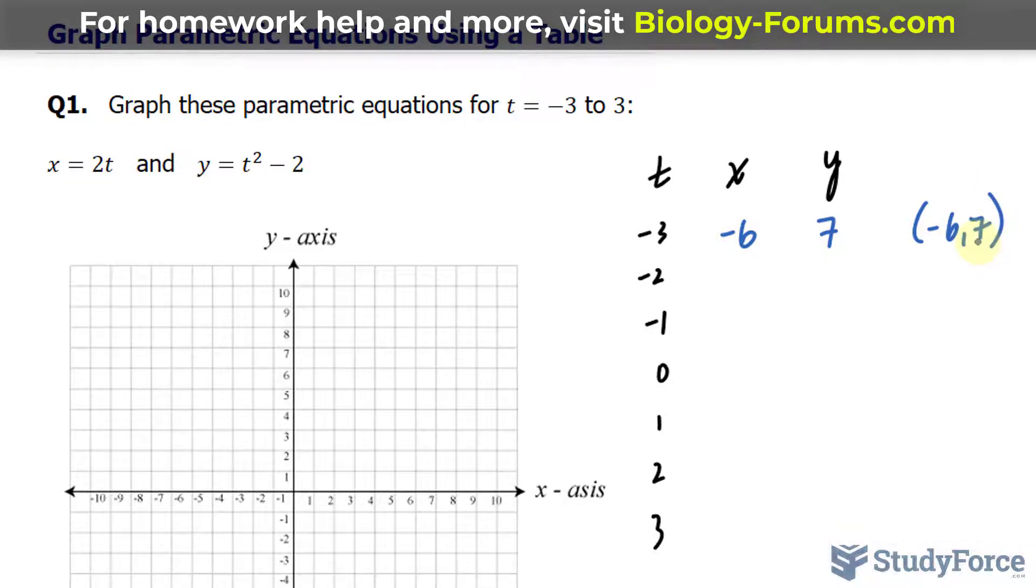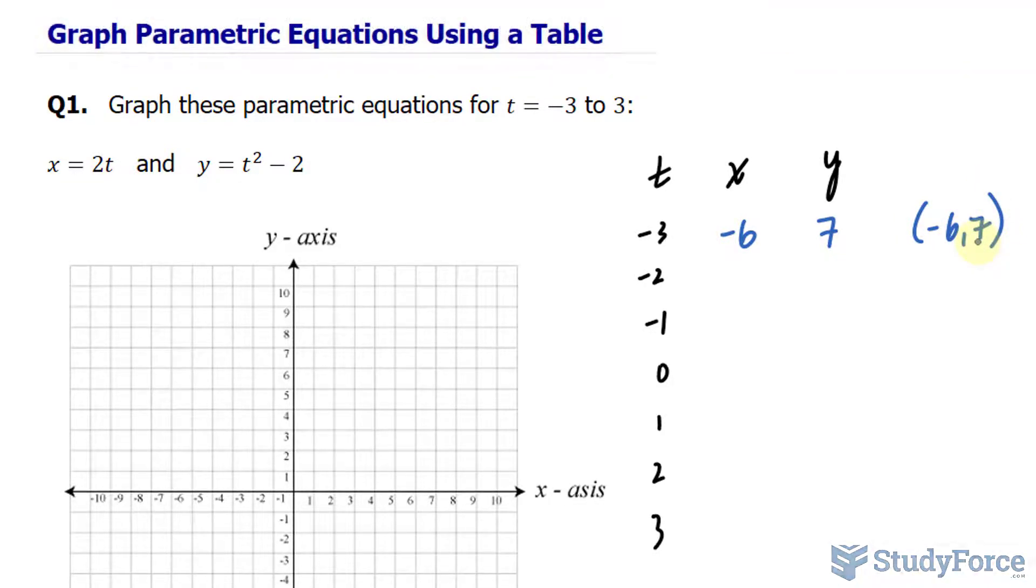Let's do a few more rows before I fill this in automatically and start the plot. Now we substitute negative 2 into here. 2 times negative 2 is negative 4. Negative 2 substituted into here gives us negative 2 raised to the power of 2, that's 4 minus 2, that's 2. So we have another point at negative 4 and 2.